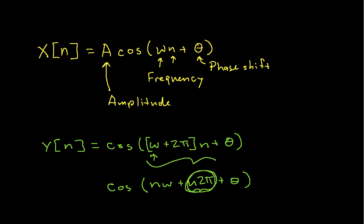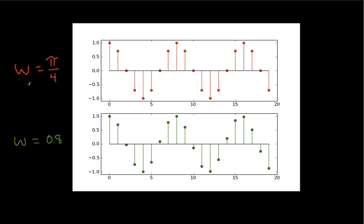The last thing is to talk a little bit about periodicity of discrete time sinusoids. And so what I have here is I have, again, a cosine waveform with an omega of pi over 4. That's what the red represents here. The green, I have a cosine waveform with an omega of 0.8. And this is approximately, very approximately, equal to pi over 4. I mean, if you take pi over 4 and round it to one digit, you get this.